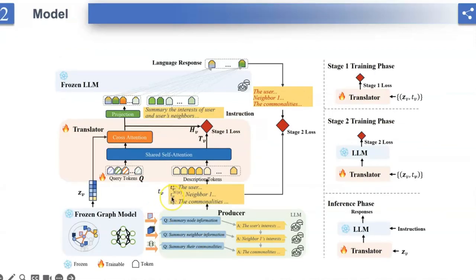To break this dilemma, we propose to bridge the pre-trained graph model and LLMs by a translator named GraphTranslator, aiming to leverage graph model to handle predefined tasks effectively and utilize the extended interface of LLMs to offer various open-ended tasks for graph model. To train such translator, we propose a producer module capable of constructing graph-text alignment data along the node information, neighbor information, and model information. By translating node representation into tokens, GraphTranslator empowers LLMs to make predictions based on language instructions, providing a unified perspective for both predefined and open-ended tasks.